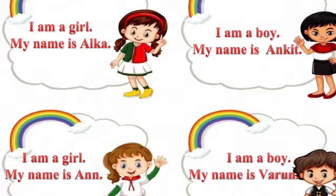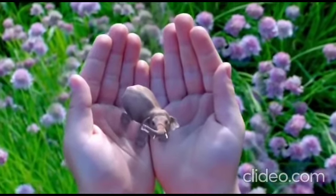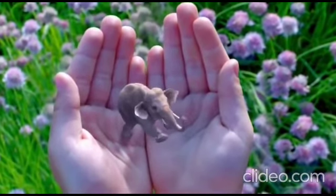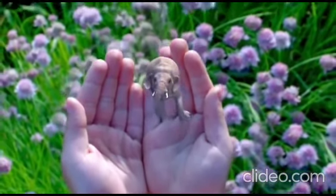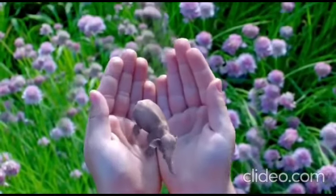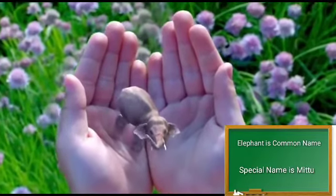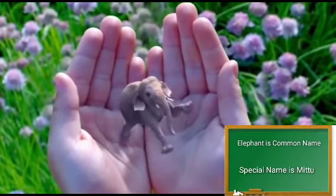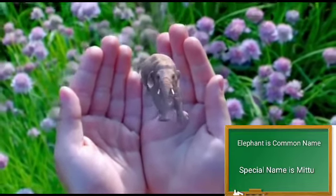I am a boy. My name is Vadun. Here, boy is a common name. Vadun is a special name. Dear children, look at my hands. What is this? This is an elephant. Elephant is a common name. Are you remembering its name? The name of this elephant is Mittu. So Mittu is a special name.